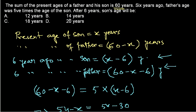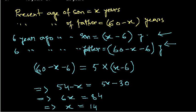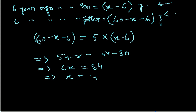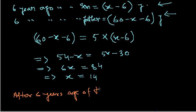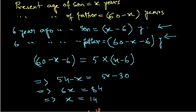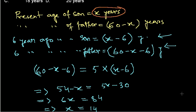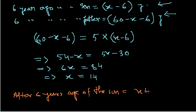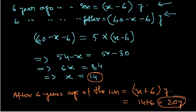Now what is the question? The question is: after 6 years, the son's age will be. According to our assumption, after 6 years the age of the son will be the present age of the son plus 6 years, so x plus 6. Putting the value of x, that is 14 plus 6, which gives us 20 years.